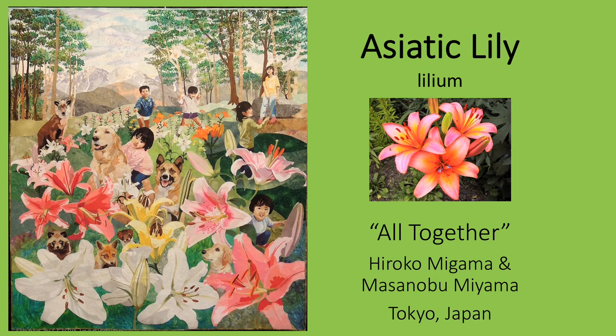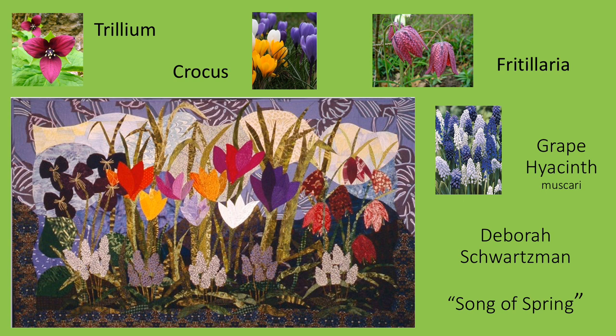Asiatic lilies are also found in quilts. This quilt made by a Japanese couple depicts their family all together in a garden of lilies. Using fused raw edge appliqué stitched with invisible thread, these quilt makers have beautifully captured the vibrant colors of the spotted blossoms, the fleshy stems, and the blade-like leaves of the Asiatic lily. Spring and spring flowers inspire many quilts. This quilt features trillium, crocus, fritillaria, and grape hyacinths.